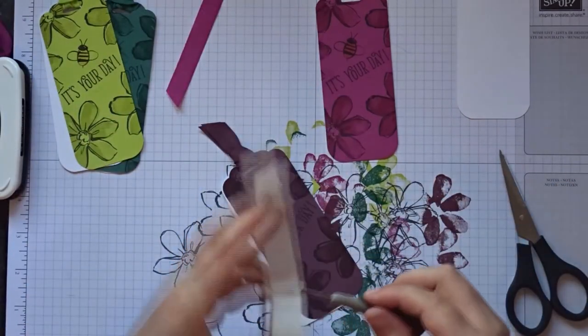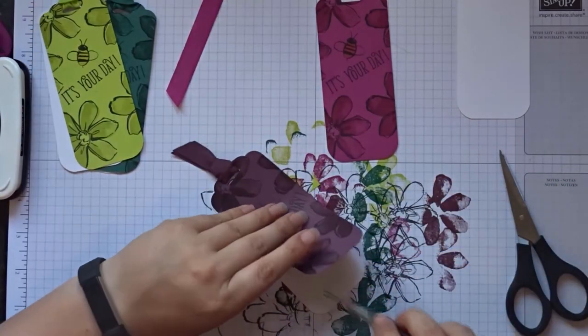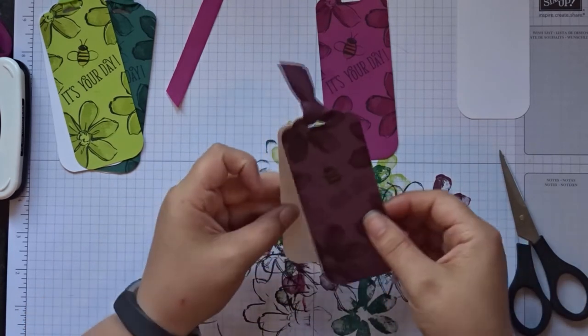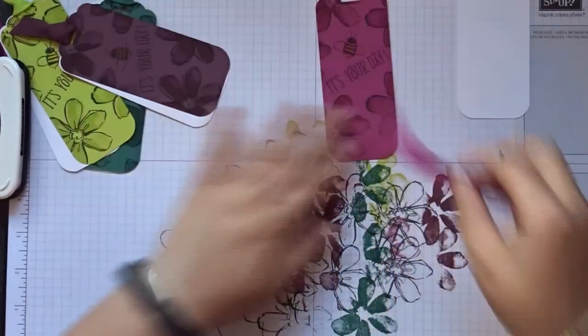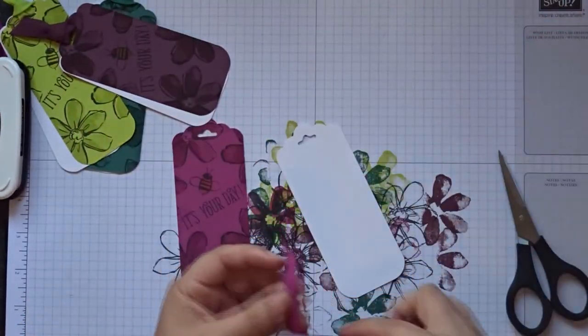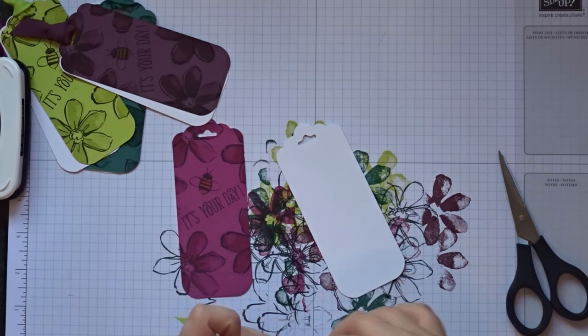Mini glue dot. I love the paper piercing tool. I've never used it for paper piercing, but it's what I always use for picking up embellishments or little bits of glue dots as it really is helpful.